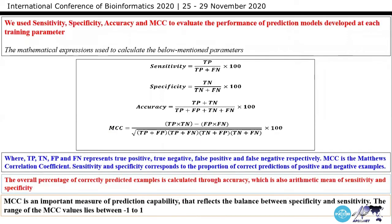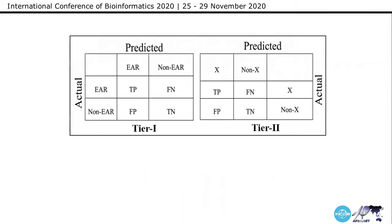We evaluated performance using the parameters: sensitivity, specificity, accuracy, and MCC. The MCC is a very important measure of prediction capability that reflects the balance between specificity and sensitivity. The range of MCC values lies between minus 1 and plus 1.